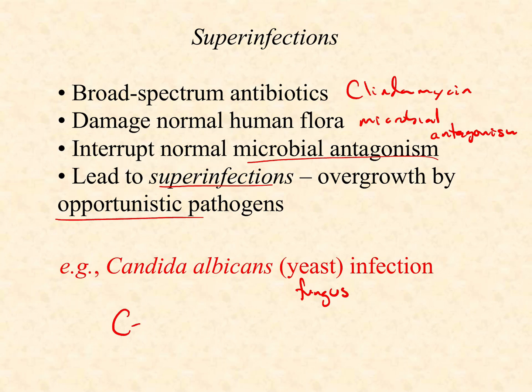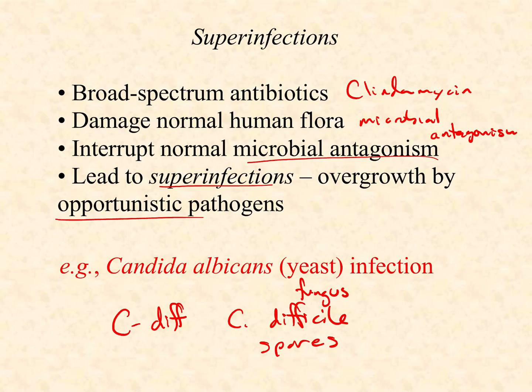Another example is C. diff — Clostridium difficile. Because C. diff forms spores, those spores are impervious to antibiotics. A long heavy course of antibiotics like clindamycin, especially oral, is going to wipe out and deplete the intestinal flora. The spores could care less because they're dormant, and then they just wake up to a whole new world where the antagonism and competition is gone. They can overgrow and colonize and cause colitis and antibiotic-associated diarrhea, and can be really difficult to get rid of.